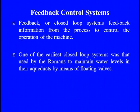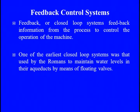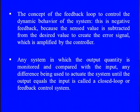Feedback, or closed loop — which are similar names — uses feedback information from the process to control the operation of the machine. Feedback is like a corrected input through which we can effectively increase performance. One of the earliest closed-loop systems was used by the Romans to maintain water levels in their aqueducts by means of floating valves, which acted as the feedback controller. The concept of the feedback loop or closed loop to control the dynamic behavior of a system involves negative feedback, because the sensed value is subtracted from the desired value to create the error signal, which is amplified by the controller and fed back as input to the system.